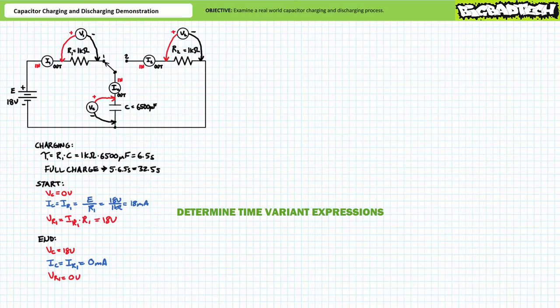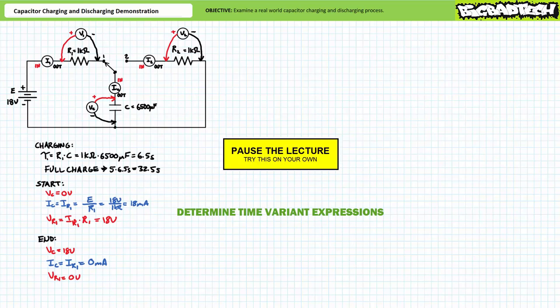We have the start points, the end points, and the time constant. See if you can derive the time-variant expressions for: current through R1 as a function of time I1(t), voltage across R1 as a function of time V1(t), current through the capacitor as a function of time IC(t), and voltage across the capacitor as a function of time VC(t). Don't worry about deriving expressions for R2 since it's effectively isolated during the charge process. By all means, pause the lecture and try this on your own.